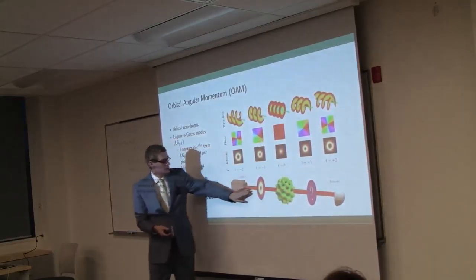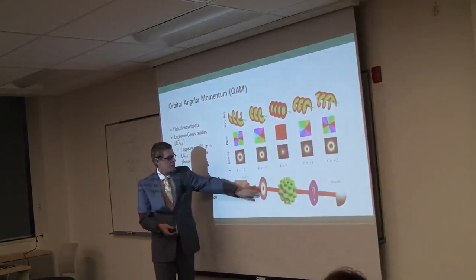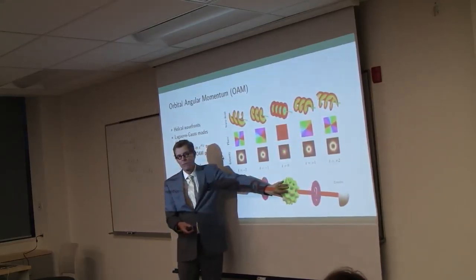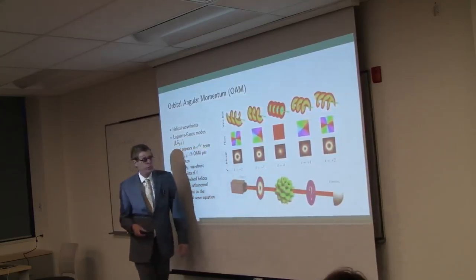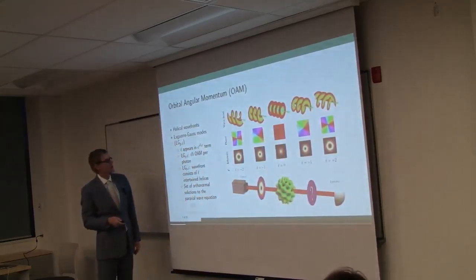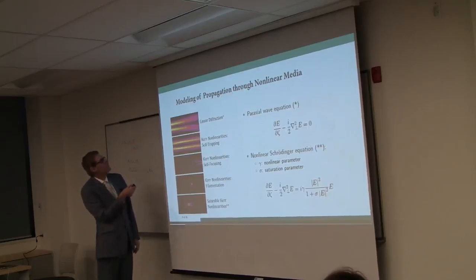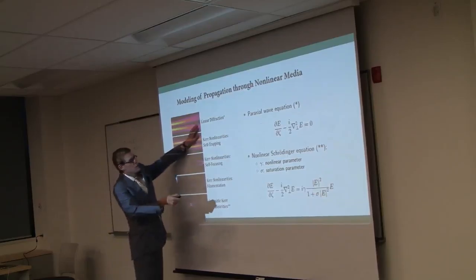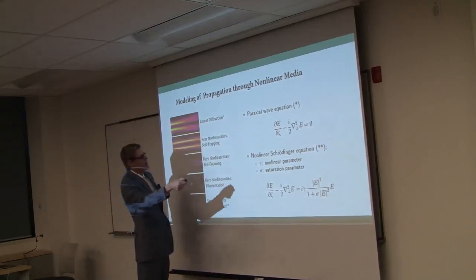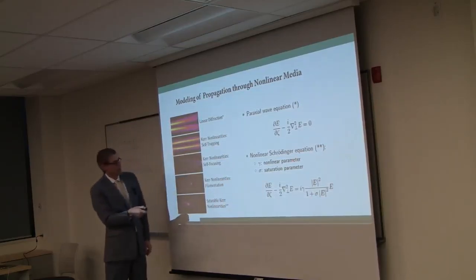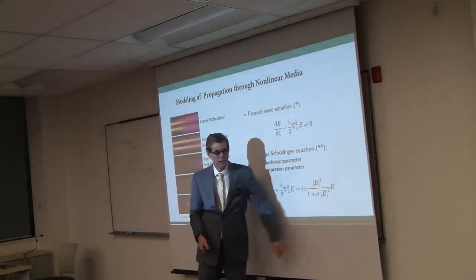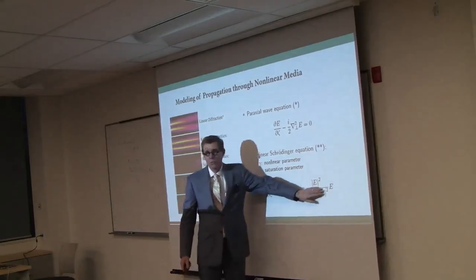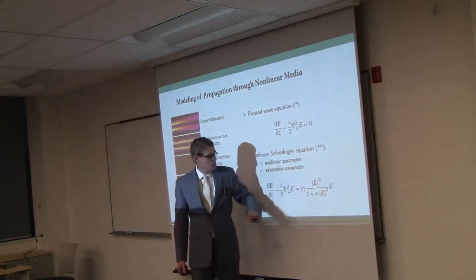So the question is, if you take one of these beams, send it through some nonlinear material, in our case, a rubidium vapor, what happens? Does the beam break up? Does it not break up? So first of all, how would you model this sort of process? Well, in the linear case, you just have the paraxial wave equation. For the nonlinear case, you just add the nonlinear term on the right-hand side.